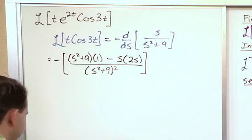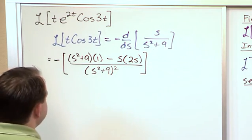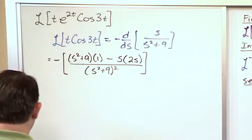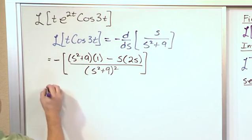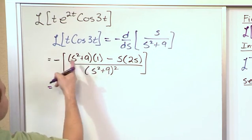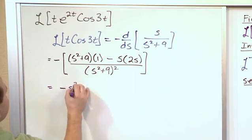And so I have a negative here, so as I'm simplifying, I'm going to distribute this negative in. So this is just times 1, so really it becomes negative s squared.